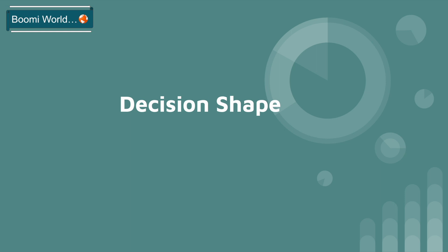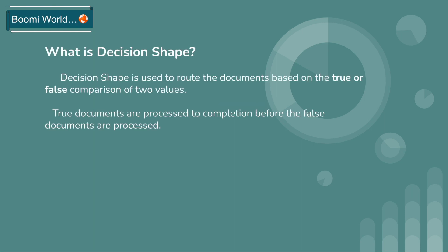Decision shape is used to route documents based on the true or false comparison of two values. True documents are processed to completion before the false documents are processed. So suppose as per your requirement you want to compare two values — at that time you can use decision shape in Boomi.